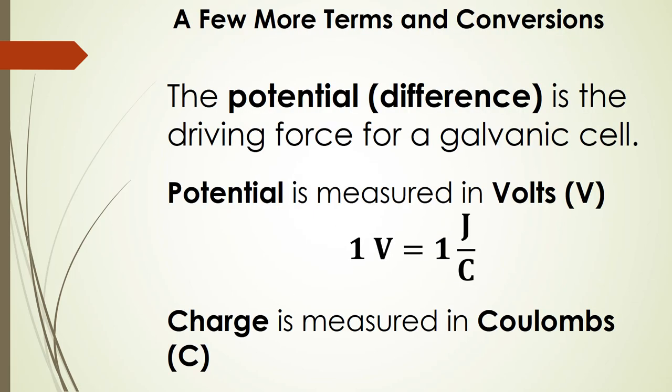So we just need a few more terms and conversions as we move through electrochemistry. The potential difference is actually very important. You'll see potential difference or just plain old potential and it means the same thing. This is the driving force for a galvanic cell. This potential is measured in volts and so one volt is equal to one joule per coulomb and coulomb is a unit for charge. Charge is measured in coulombs and it's represented with a capital C.